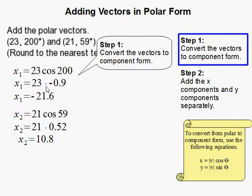You multiply them and here we go. So the x component of the first vector would be negative 21.6, the x component of the second vector would be 10.8.